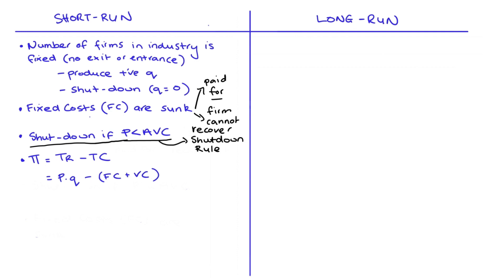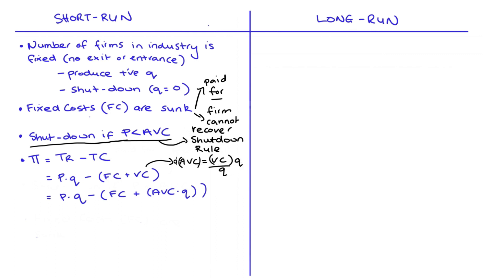Our variable costs are equal to average variable costs times quantity (AVC × Q). We get this from the definition of average variable cost: AVC = VC / Q, so multiplying both sides by Q gives VC = AVC × Q. Substituting this into our profit function gives us a really useful expression that will help explain the shutdown rule.